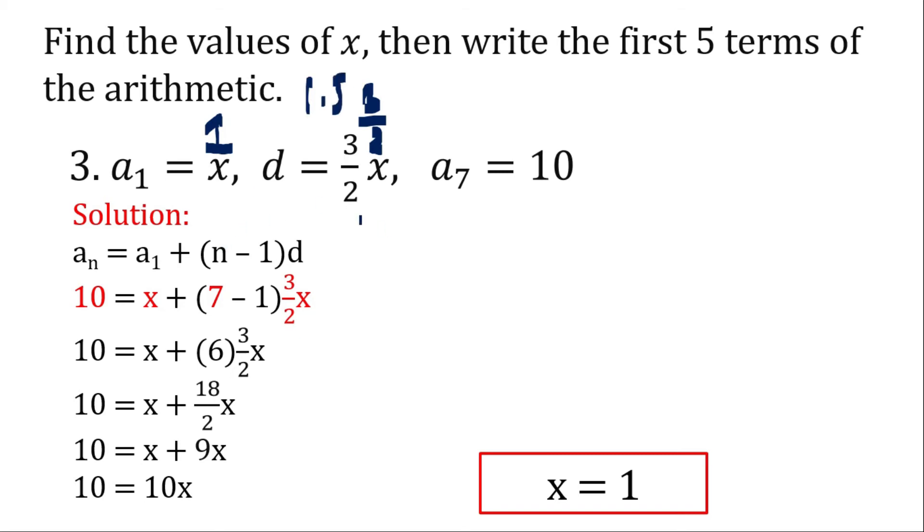2 into 3, 1, 2, then 1, then bring down 0. So 10 divided by 2 is 5, so 1.5. So we have 1 for our first term and 1.5 for our common difference.